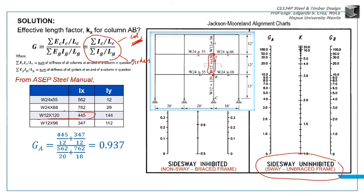The column itself - AB W12 by 120. This is it. W12 by 120. Its Ix is 445. So this is the 445. What's the length of that column? 12 feet.